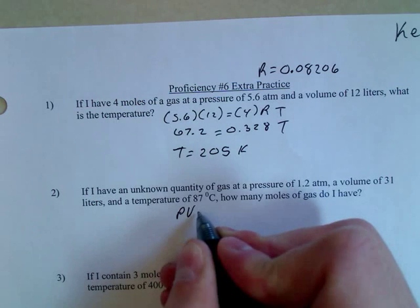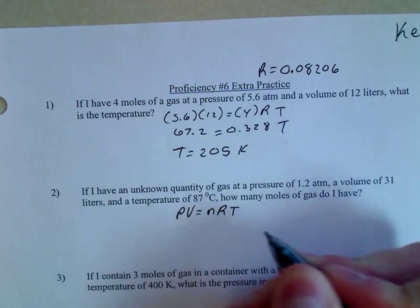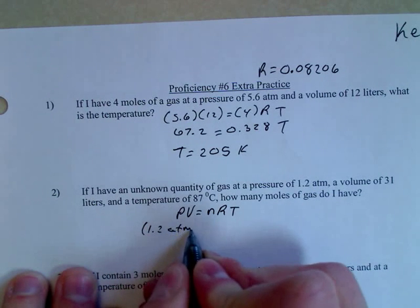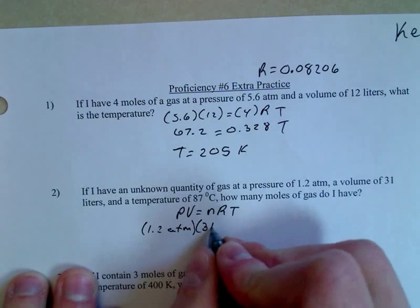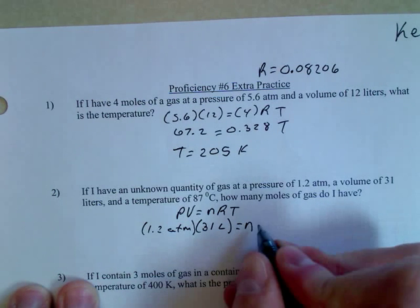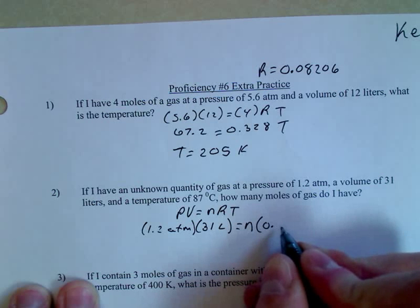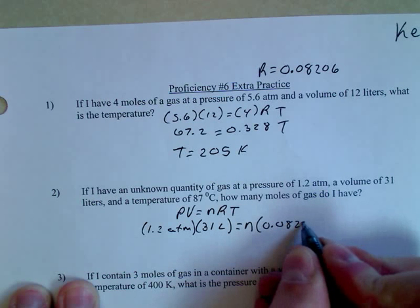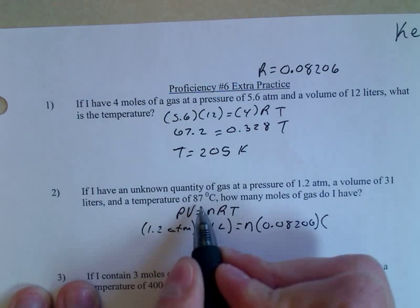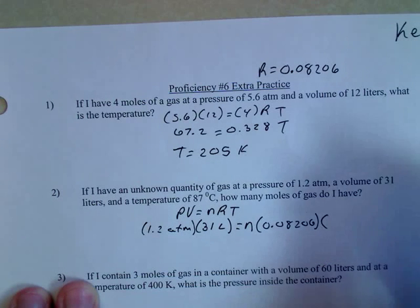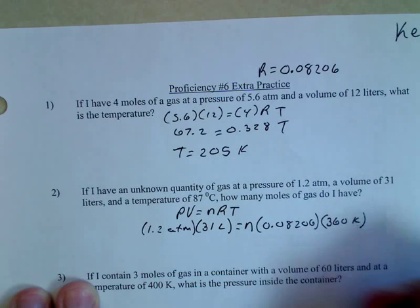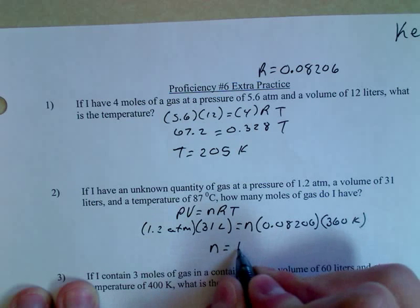So the next one down here, again we're going to use PV equals nRT. Our pressure is 1.2 atmospheres, our volume is 31 liters, our number of moles is what we're looking for, R is always 0.08206, and our temperature—the important thing here is remember you have to always convert this to Kelvin. So 87 degrees is no good, we have to turn that to 360 Kelvin. And then when you do the math there, your number of moles should equal about 1.3.